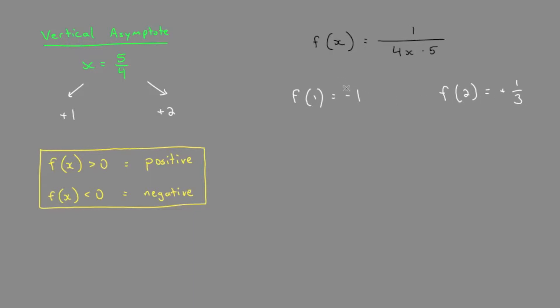We really just care about the signs, whether it's positive or negative, because that will tell us if the function is in the positive or negative region. So we can see on the left side of the asymptote, we got a negative number, therefore the function is in negative territory. It's negative where x is less than our asymptote, 5 over 4.